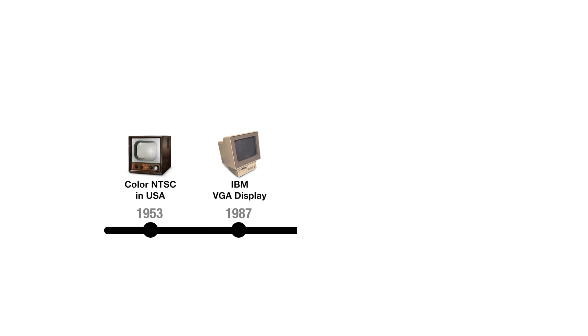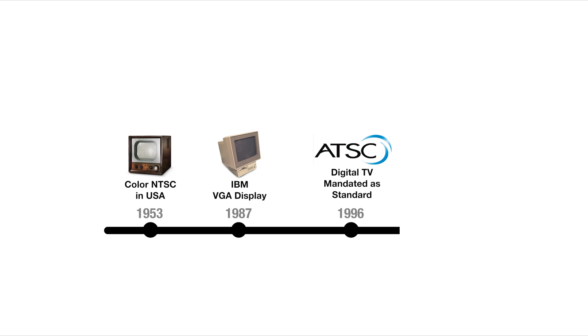A few years forward to 1987, IBM introduced a computer display with a resolution of 640x480, which would become the VGA standard used for many years after. The real breakthrough came in 1991 when the Advanced Television Systems Committee, or ATSC, made the decision to shift from analog to digital TV. By 1996, digital broadcasting had officially been set as the future of television.